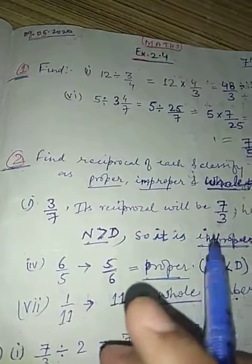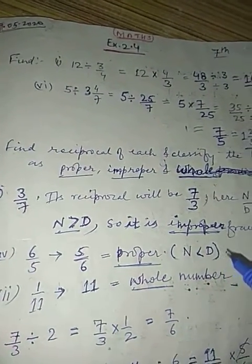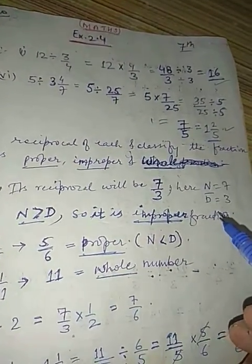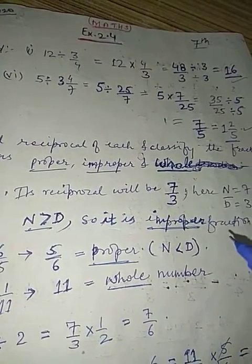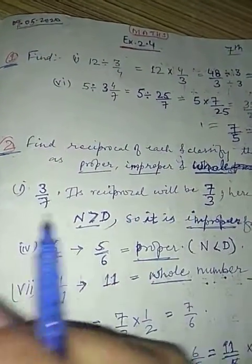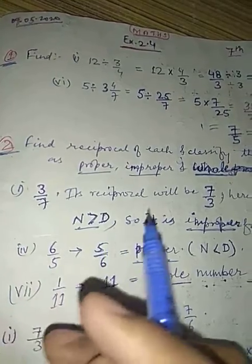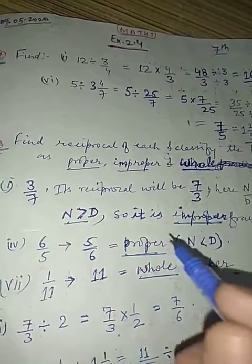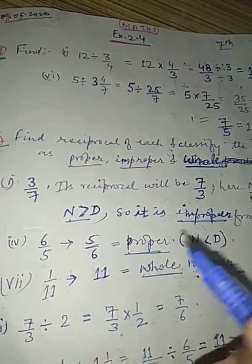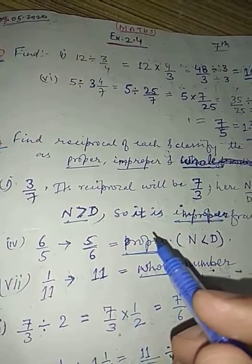Move on to question number two: Find the reciprocal of each and classify the fraction as proper, improper, and whole numbers. You have to find the reciprocal and then classify it as proper, improper, or whole number.